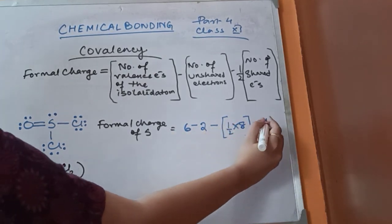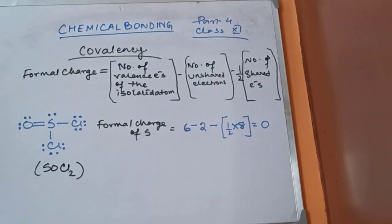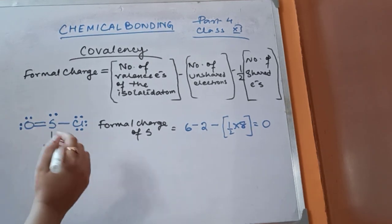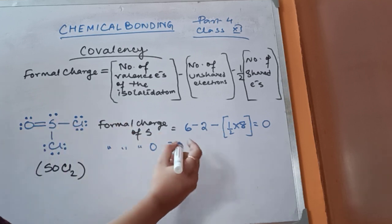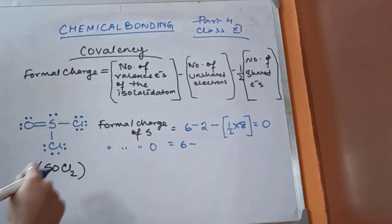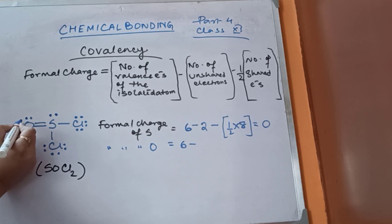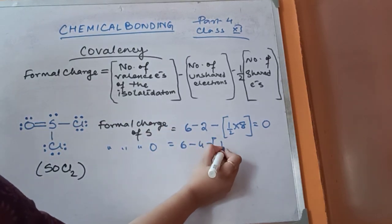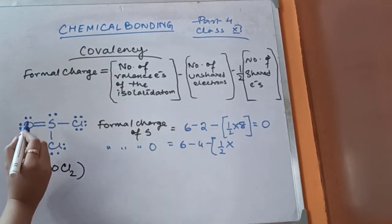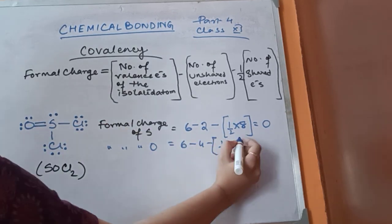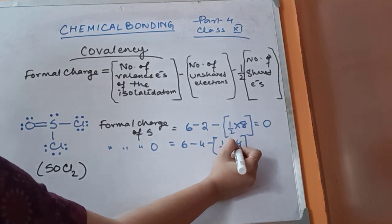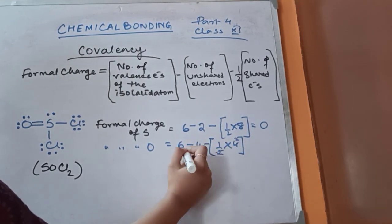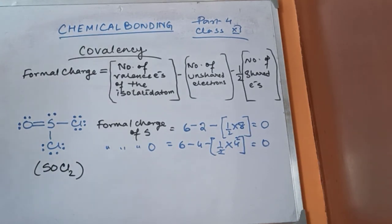For the oxygen atom in SOCl₂: number of valence electrons is 6, number of unshared electrons is 4, number of shared electrons is 4 (half = 2). So: 6 minus 4 minus 2 = 0. Both Cl atoms have the same bonding, so they will have the same formal charge. For chlorine (2, 8, 7): number of valence electrons is 7, unshared electrons is 6, shared electrons is 2 (half = 1). So: 7 minus 6 minus 1 = 0. The formal charge on each atom of SOCl₂ is 0.